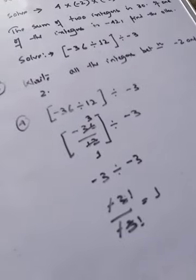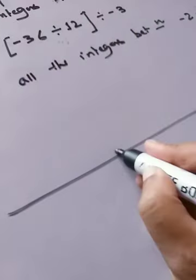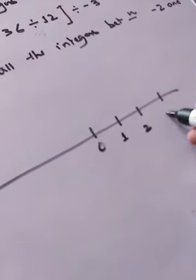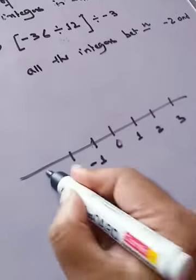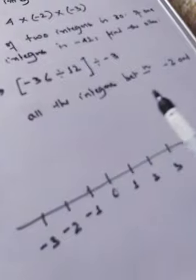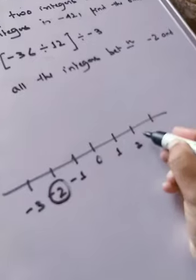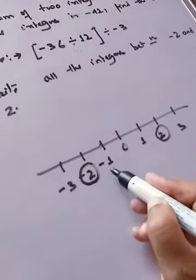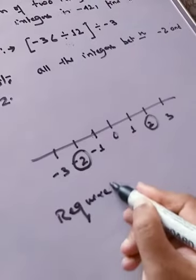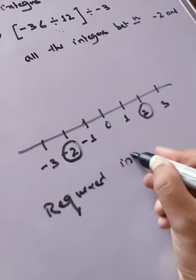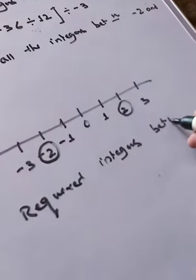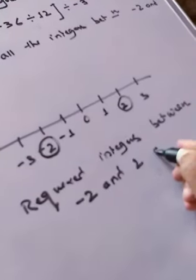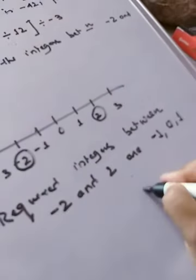Question number five: write all the integers between minus 2 and 2. Draw a number line — positive numbers are on the right, negative numbers on the left. Between minus 2 and 2, the integers that fall in between are minus 1, 0, and 1. So the required integers between minus 2 and 2 are minus 1, 0, and 1.